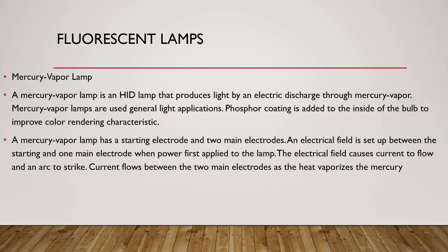Mercury vapor lamp: a mercury vapor lamp is an HID lamp that produces light by an electric discharge through mercury vapor. Mercury vapor lamps are used generally in lighting applications. Phosphor coating is added to the inside of the bulb to improve color rendering characteristics. A mercury vapor lamp has a starting electrode and two main electrodes. An electrical field is set up between the starting electrode and one main electrode when power is first applied to the lamp. The electrical field causes current to flow and an arc to strike. Current flows between the two electrodes as the heat vaporizes the mercury.